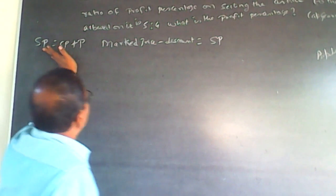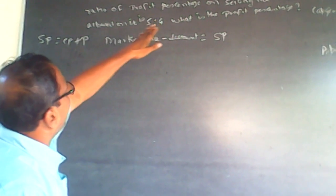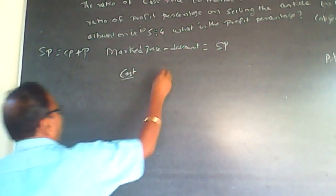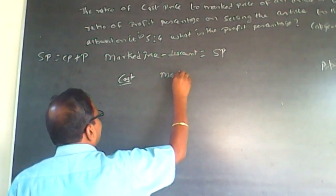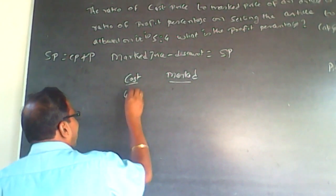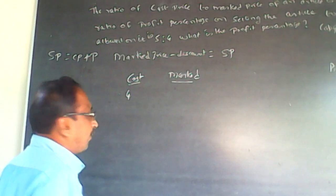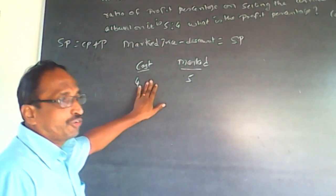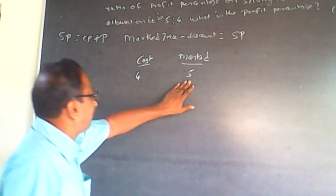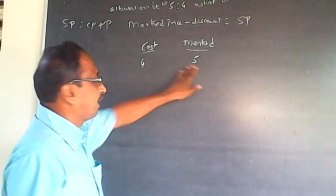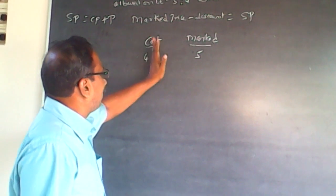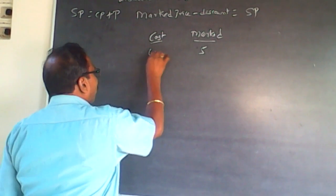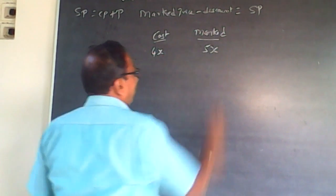Now, cost price to mark price is in the ratio 4 to 5. Whenever a ratio is given as 4 to 5, I can multiply by the same number — the ratio is always maintained. So if this is 4, this will be 5; if this is 8, this will be 10. I will make them as 4x and 5x.